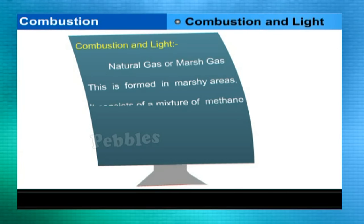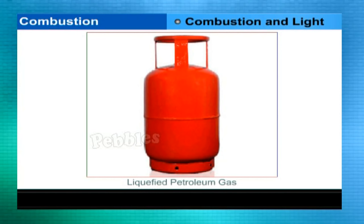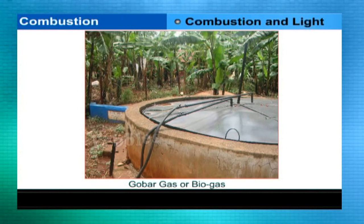Gaseous fuels: natural gas or marsh gas is formed in marshy areas and consists of a mixture of methane and ethane. Biogas (gobar gas) is obtained by bacterial action on cattle dung and water in circular pits in the absence of air. Methane and ethane are the main constituents of gobar gas. This fuel is becoming increasingly popular in villages because it is inexpensive.